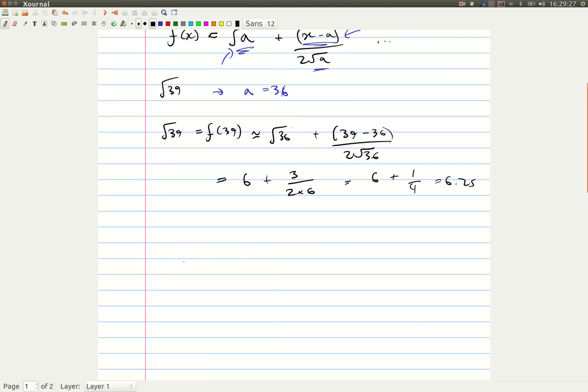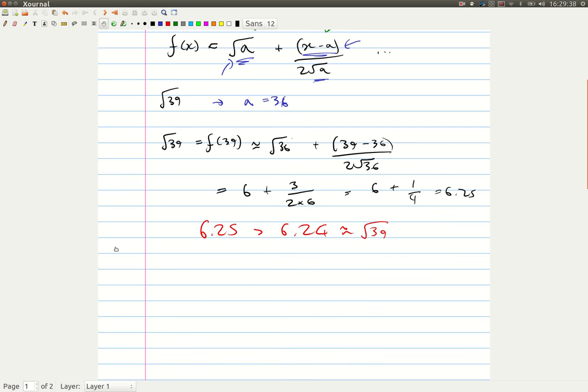We're getting a number that's above our actual answer. So 6.25 is bigger than 6.24, which is approximately equal to square root of 39. Why is this? Well, the Taylor series continues.